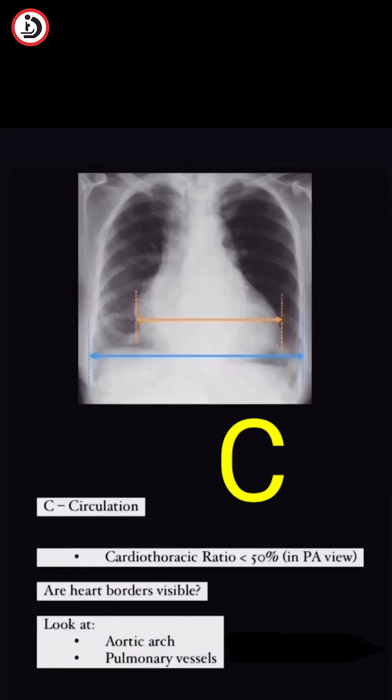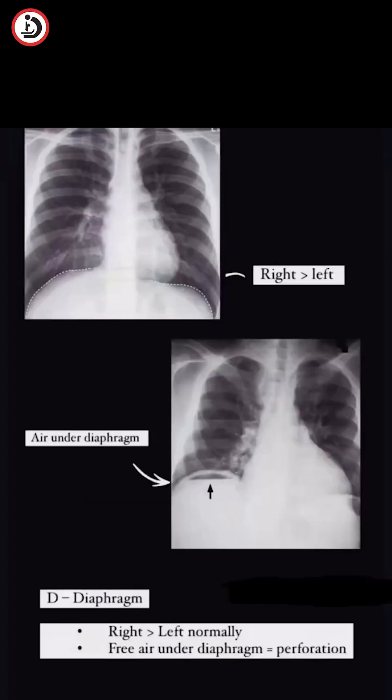C is for circulation — heart big or small? Check the borders, vessels and all.